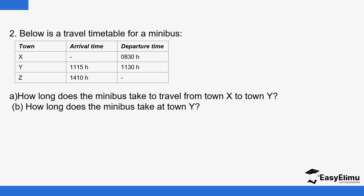The same approach can be used for the next question: how long does the minibus take to travel from town X to town Y? These times are given in the 24-hour system. In the 24-hour system, times represent the number of hours from the previous midnight, and time is read from midnight to midnight. The departure time at X is 08:30, meaning 8 hours and 30 minutes from midnight.